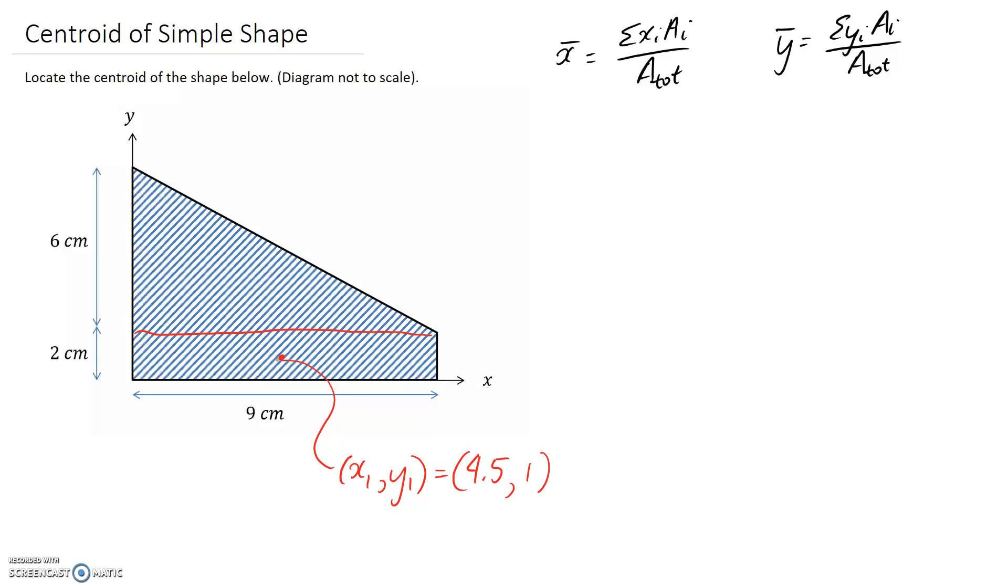Now we also need to do it for the other shape that makes up our bigger one, so I guess it's here, and this is x2, y2. The rule for right-angled triangles is that your centroid sits 1/3 of that right angled corner in both of the directions. So this distance in here to this centroid is going to be 1/3 of this length.